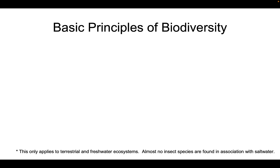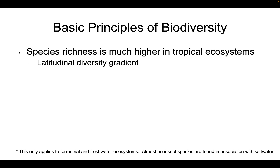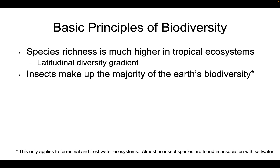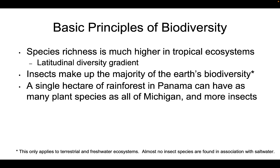To sum up the principles of biodiversity: species richness is much greater in the tropics, in ecosystems like rainforests and coral reefs — this is the latitudinal diversity gradient. Insects make up the majority of Earth's biodiversity, though this applies mainly to terrestrial and freshwater ecosystems, as very few insects associate with saltwater. A single hectare of rainforest in Panama — the size of two football fields — can have as many plant species as all of Michigan, and more insect species than all of Michigan.